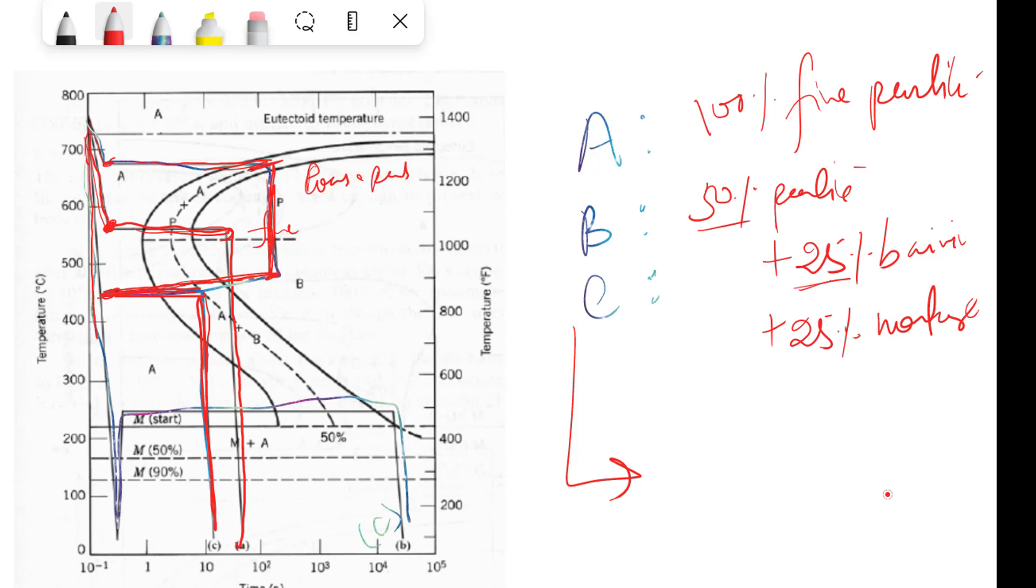Here in option C we are directly cooling it below this Mf - that means the martensite transformation finish temperature. That means here we are getting 100 percent martensite. Then we are again heating it at higher temperature, that is around 250 degrees. At 250 degrees centigrade if we heat martensite, we can get tempered martensite, and this is low temperature tempering.